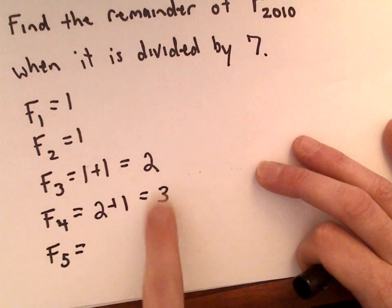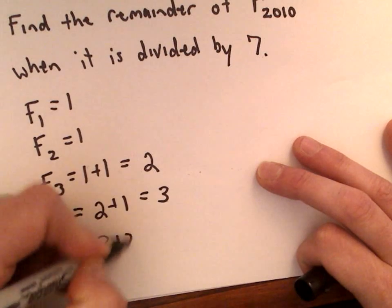So for example, to get the fifth term, again, you add the two prior terms. 3 plus 2 is 5.